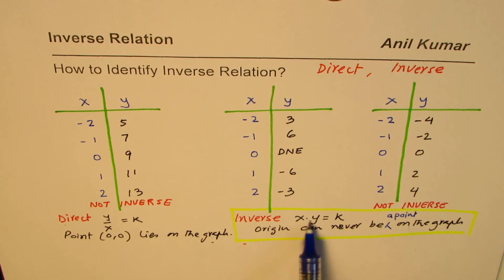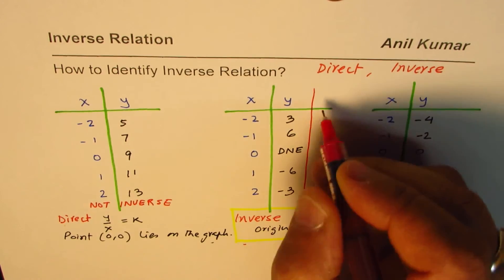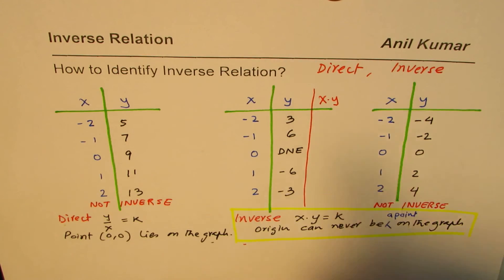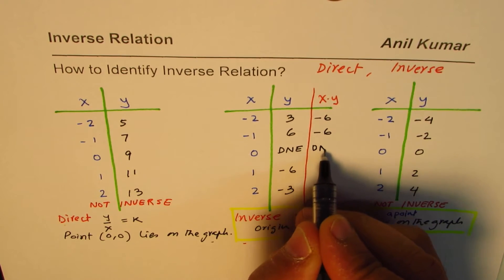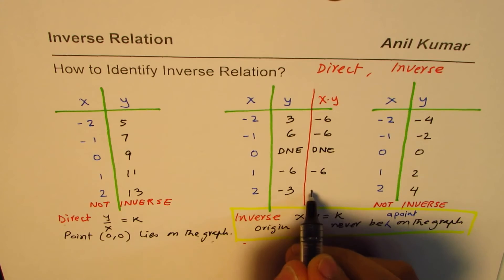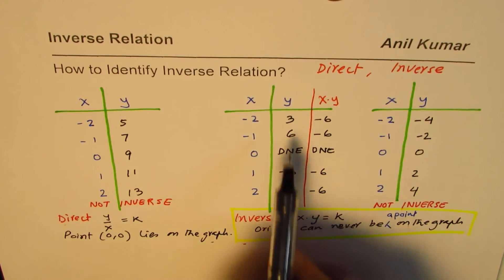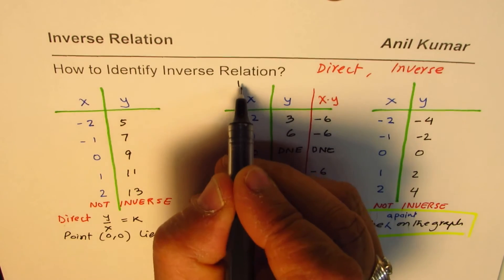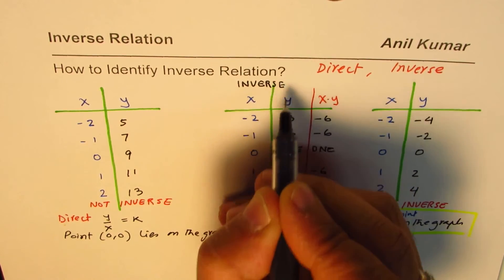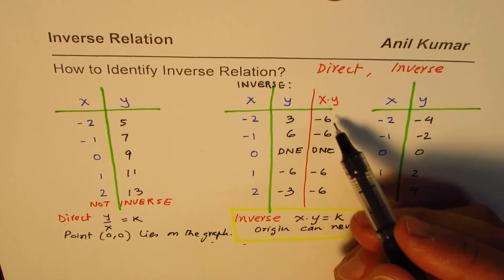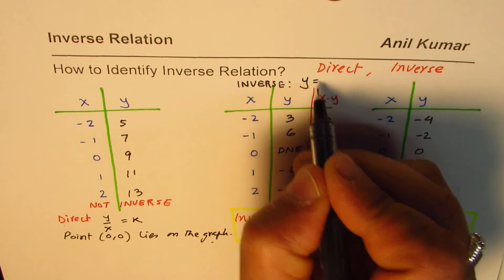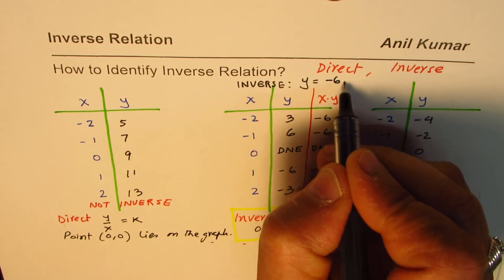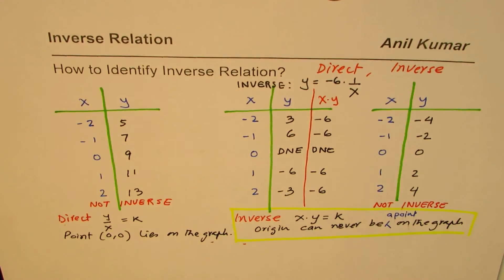For the middle table, we test the product X times Y. So minus 2 times 3 gives minus 6, minus 1 times 6 gives minus 6, the zero entry does not exist, and the remaining products are also minus 6. The product is constant at minus 6, so this is an inverse relation. The equation becomes y = minus 6 times (1/x).